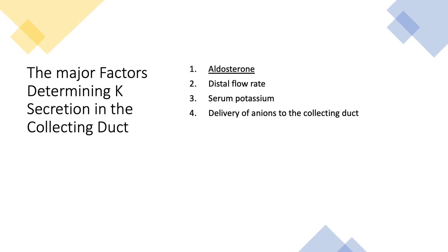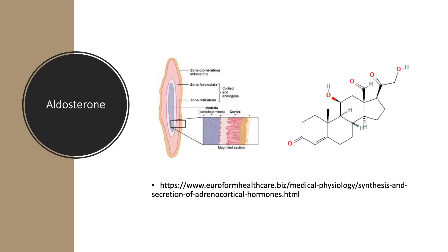There are four major factors that determine potassium secretion in the collecting duct: aldosterone, which is by far the most important; distal flow rate; serum potassium itself; and delivery of anions to the collecting duct. Let's talk about each. Aldosterone comes from the adrenal glands, specifically from the zona glomerulosa.